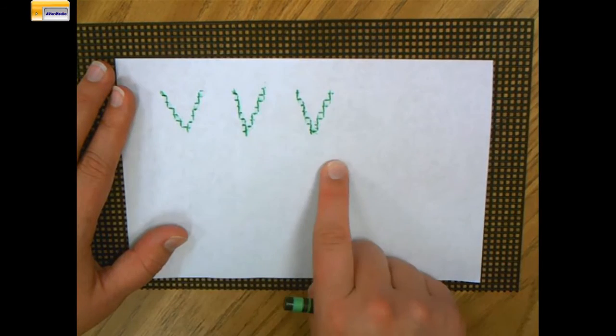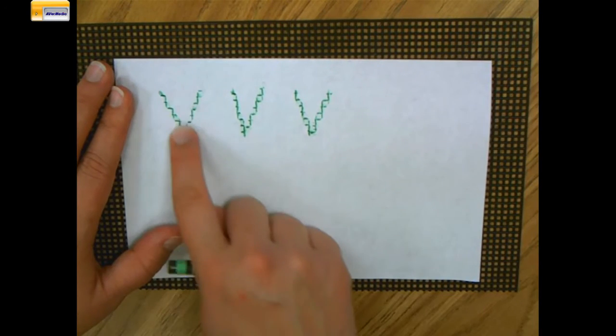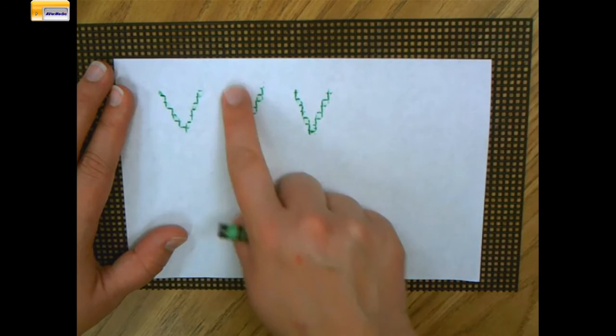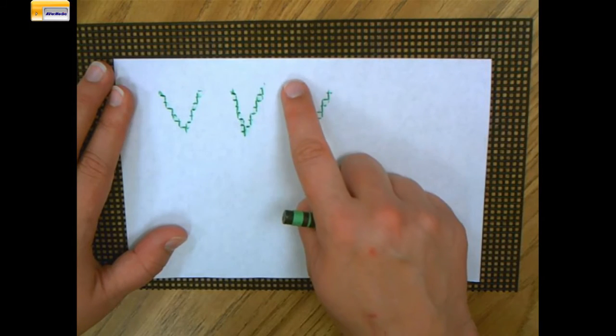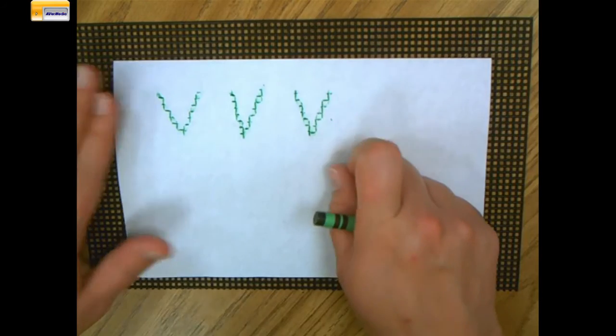Can you try to write that letter three times and then trace it with your finger and say the name and sound? V says V. V says V.